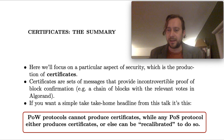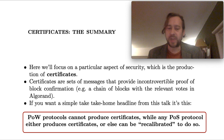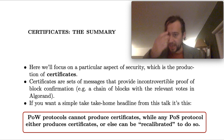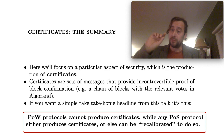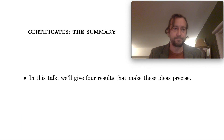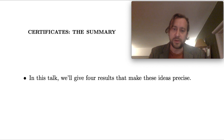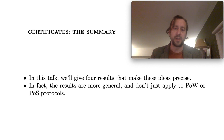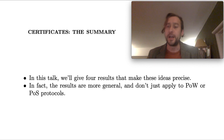If you want a simple take-home headline from this talk, it's this: proof-of-work protocols can't produce certificates, while any proof-of-stake protocol either produces certificates or could be recalibrated or tweaked to do so. What we really mean is that if you take any proof-of-stake protocol and choose the right notion of confirmation, then it will produce certificates. The results we give are more general in the sense that they don't just apply to proof-of-work or proof-of-stake protocols — they apply to permissionless blockchain protocols in a more general sense.